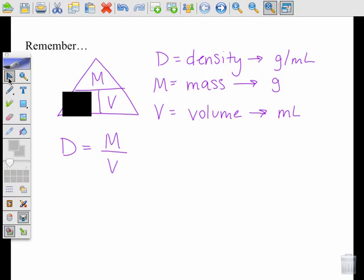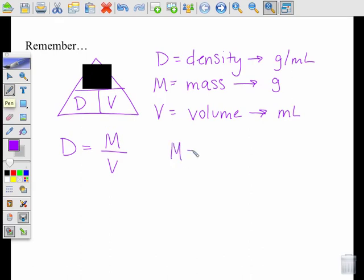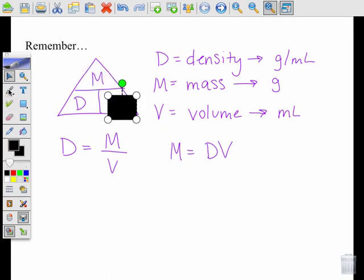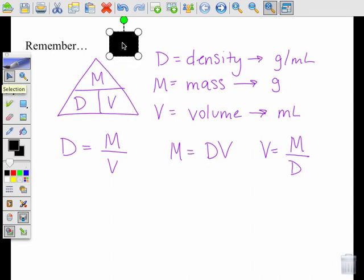Let's say we want to find M. So I move my little square up there. Now it's going to be M equals D times V, because they're next to each other. And finally, V is going to equal mass over density. So that way, you can use the triangle to find all different kinds of formulas.